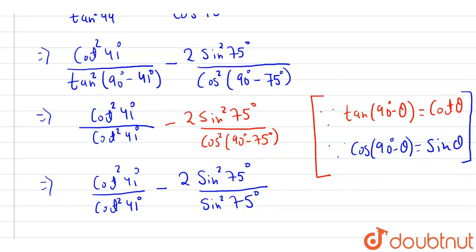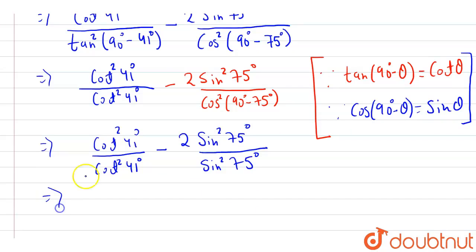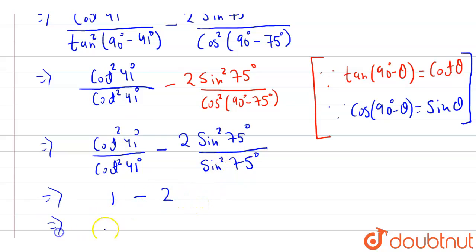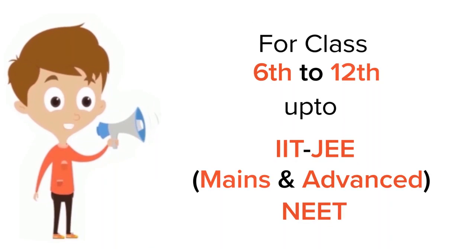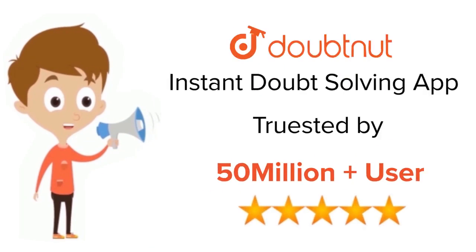Now we can see that cot squared 41 degrees over cot squared 41 degrees cancels with each other and becomes 1. Similarly, sin squared 75 degrees over sin squared 75 degrees also cancels to give 1. Therefore, 1 minus 2 into 1 equals minus 1. Hence, minus 1 is our final answer. Thank you.